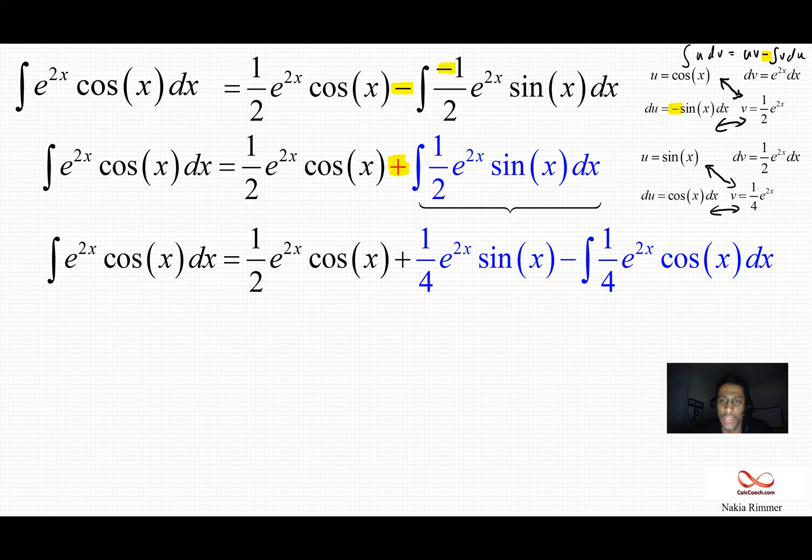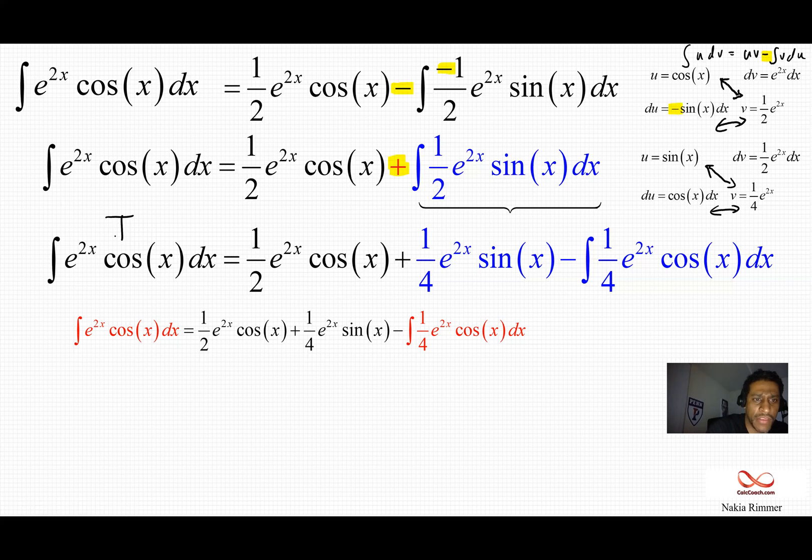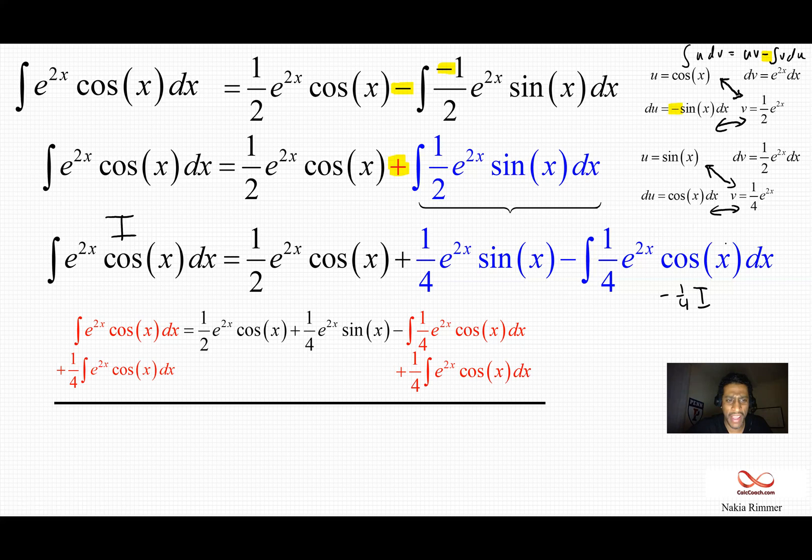So what do we do now? Well, at this point the calculus is over. And it's just going to be algebra. Imagine that this is called i. And this is minus one fourth of i. We'll add that over and have five fourths of i. Here it is in red.